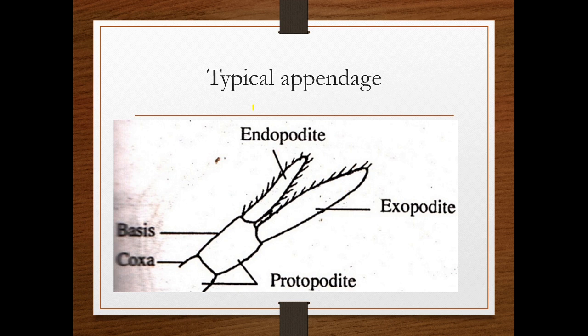Now let's go into the details of each appendage. A typical appendage has three parts: the protopodate, the exopodate, and the endopodate. These are the three major divisions of a typical appendage.